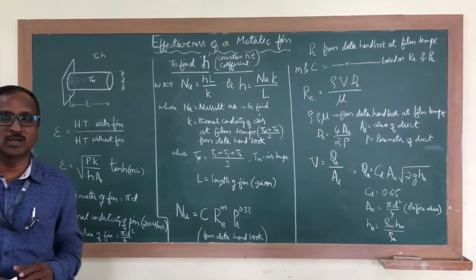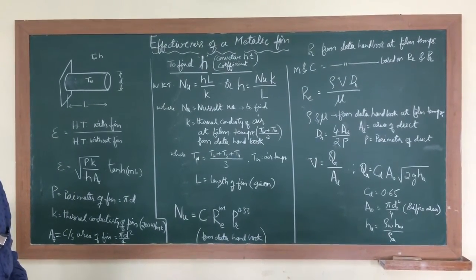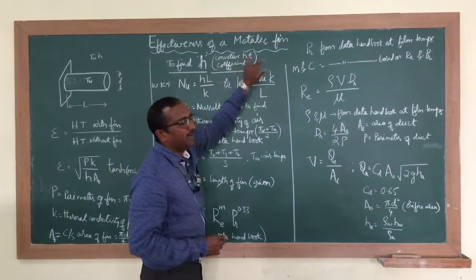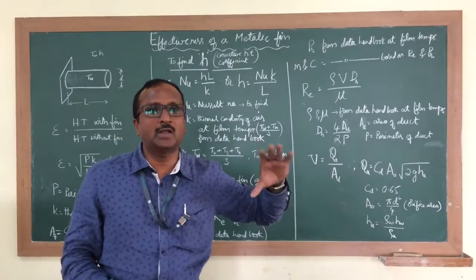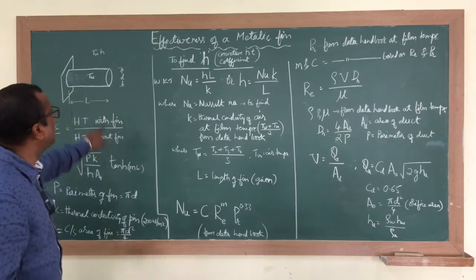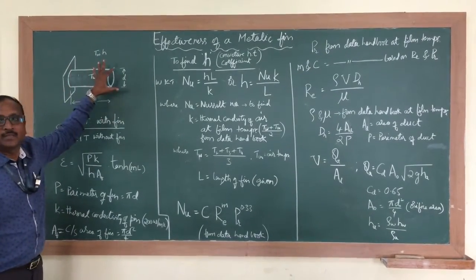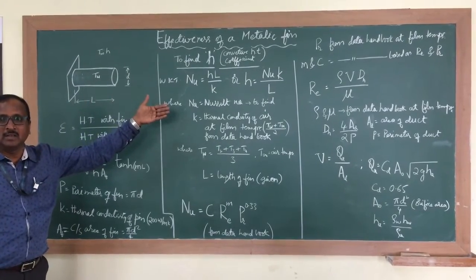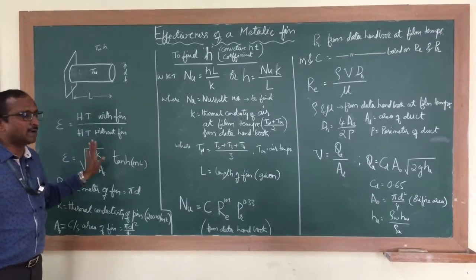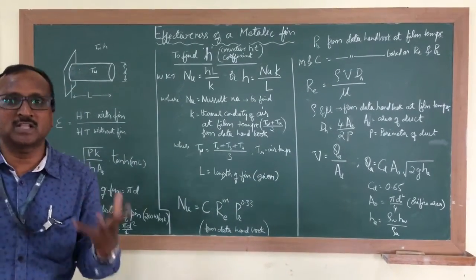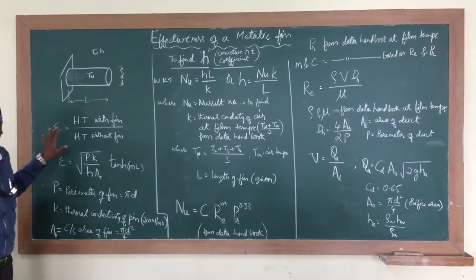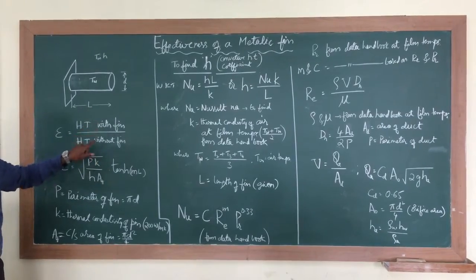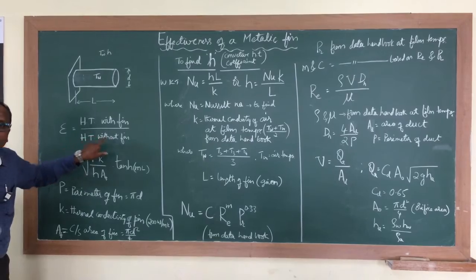Dear students, today we are going to conduct an experiment to find the effectiveness of a metallic fin. A fin is an extended surface used for increasing the rate of heat transfer. We have taken a pin fin — a circular cross-section pin fin — and the theory regarding this fin we have studied in three classes. The effectiveness of a metallic fin is the ratio of heat transfer with fin to heat transfer without fin.